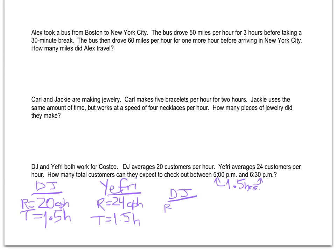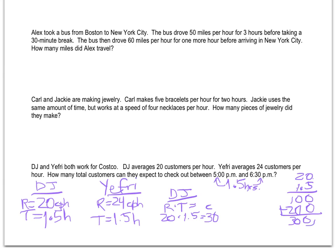Using the formula rate times time equals output — in this case how many customers checked out — for DJ we have 20 times 1.5, which equals 20 plus half of 20, so that's 30. If you're not sure, you can always multiply it on the side: 20 times 1.5. Working through the multiplication, we get 300, then move the decimal in one place, giving us 30. So DJ checks out 30 customers total.